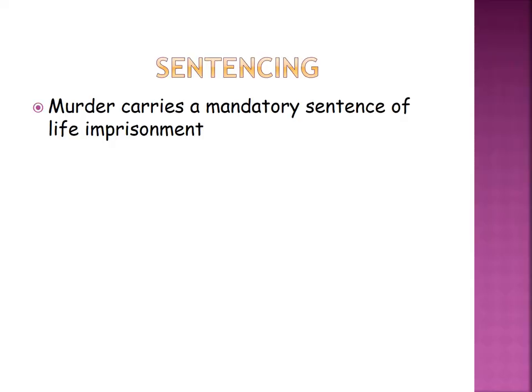In terms of sentencing, there is a difference between murder and voluntary manslaughter. Murder carries a mandatory sentence of life imprisonment. Remember that in distinguishing between different hallmarks of murder — aggravating features such as how many victims, the way in which a victim is killed, who the victim is, their position in society such as a police or serving prison officer — you would be given a longer term of imprisonment. This is what we call a tariff under Schedule 21 of the Criminal Justice Act.